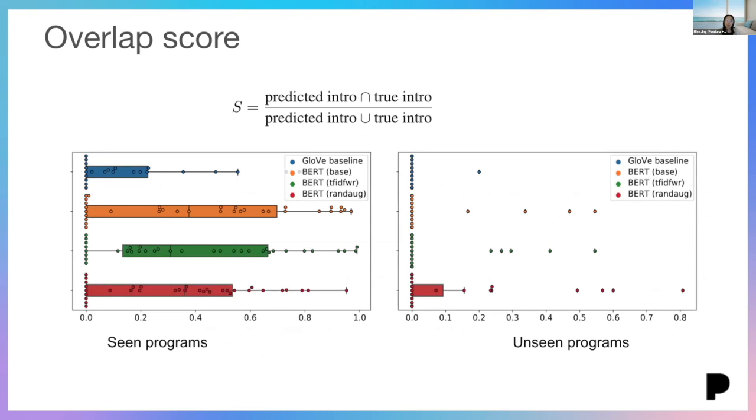And additionally, we also evaluate our model by looking at the overlap between the predicted intro and the ground truth. On the left, this is the results on the seen programs. And here we found that the base BERT model and the BERT with TF-IDF word replacement both work pretty well. And on the right, we found that the models generally do not do as well. However, the random augmentation model still does a little better than the other models.